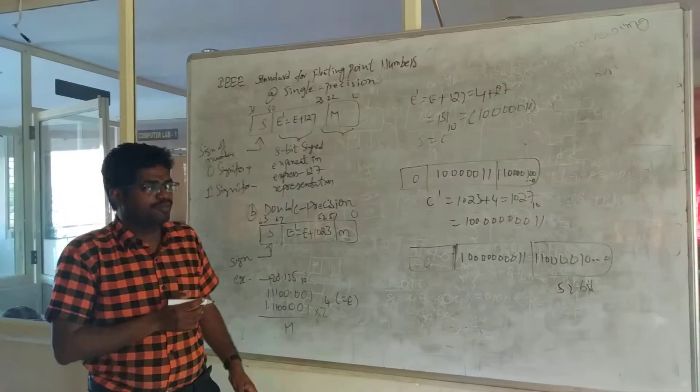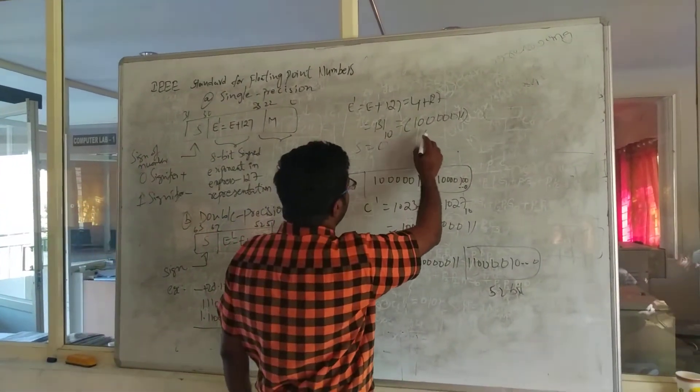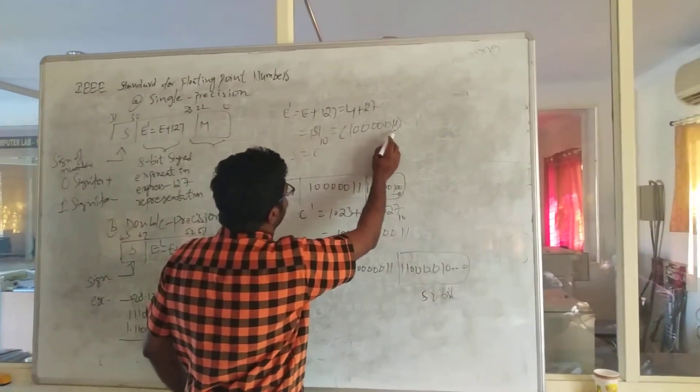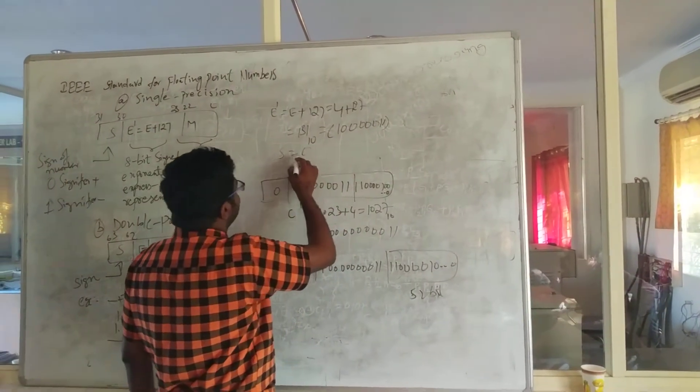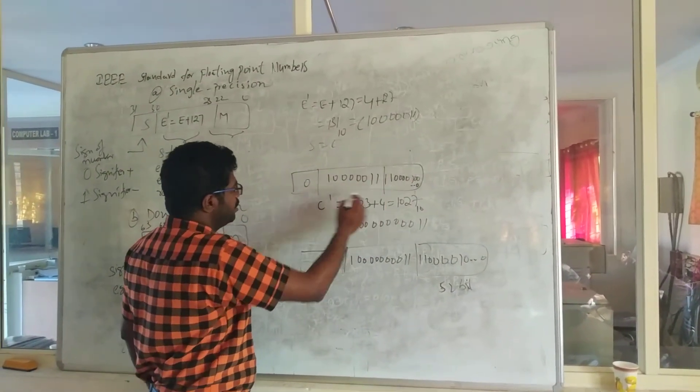So instead of finding the value, I am directly writing 131's binary number, that is 1 followed by 5 zeros and 11. So here significantly it is 0.